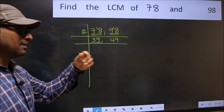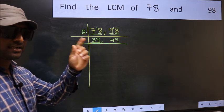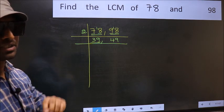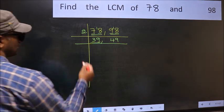3 plus 9, we get 12 and 12 is divisible by 3. So this number is also divisible by 3. Take 3.